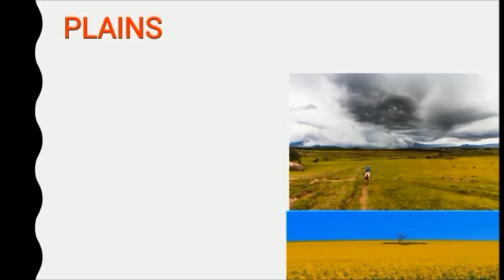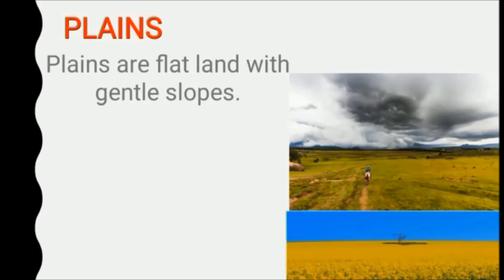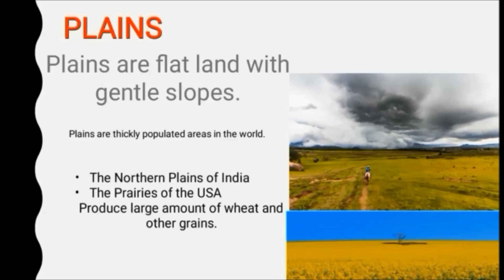What are plains? Flat areas of land are known as plains. Plains also have slope, but the slope of the plains is very gentle. Plains are very fertile — crops grow well in plain areas, and therefore plains are the most thickly populated areas in the world.